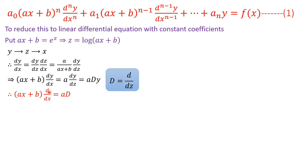So we have the substitution: (ax + b)·(d/dx) becomes a·D. Notice that the coefficient of d/dx was (ax + b), which is not constant, but now the coefficient of D is a, which is constant. This is the result for the first-order differential operator.